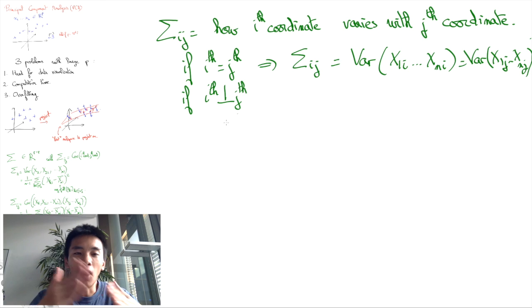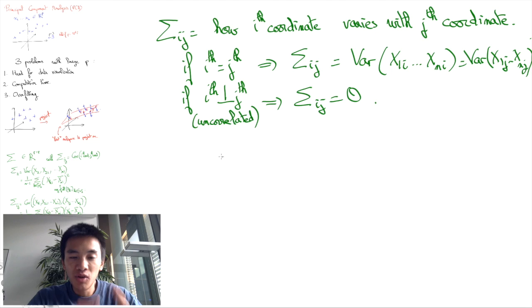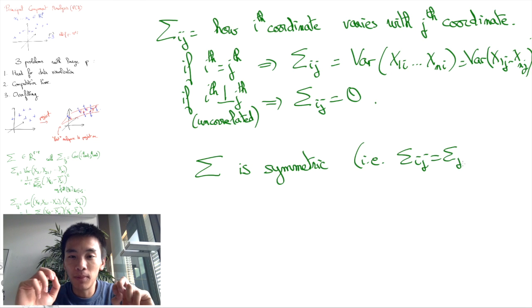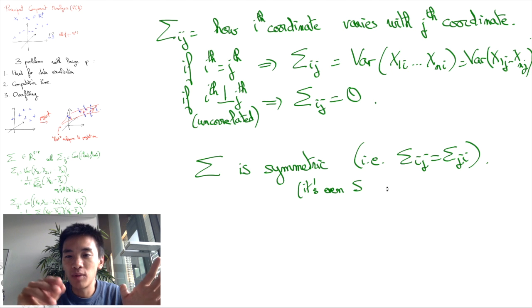Interestingly, the covariance matrix sigma is a symmetric p by p matrix, since the way i varies with j is equal to the way j varies with i.